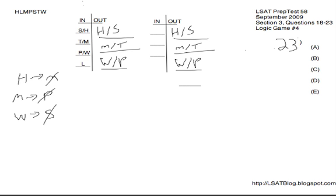Number 23 is a rule substitution question. They're asking us to remove the rule that M in requires P and T to be out, and replace it with an equivalent rule — no more limiting and no less limiting. We already know from the original rules that M conflicts with H, P, and T. So the only variables that M could ever appear with are L, S, and W. Choice B says exactly this — it's simply another way of saying something we already know — so it's our answer. If B were true instead of the rule that M conflicts with both P and T, it would have an identical effect.